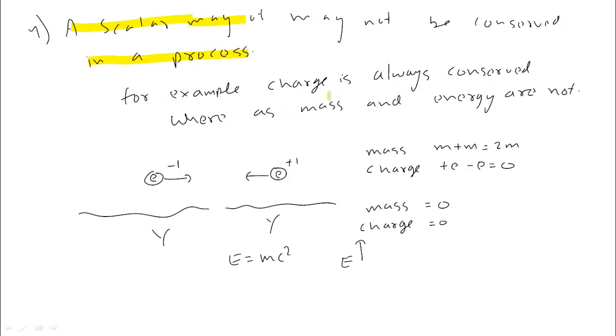For example, charge is always conserved. Mass or energy is an example that may or may not be conserved.